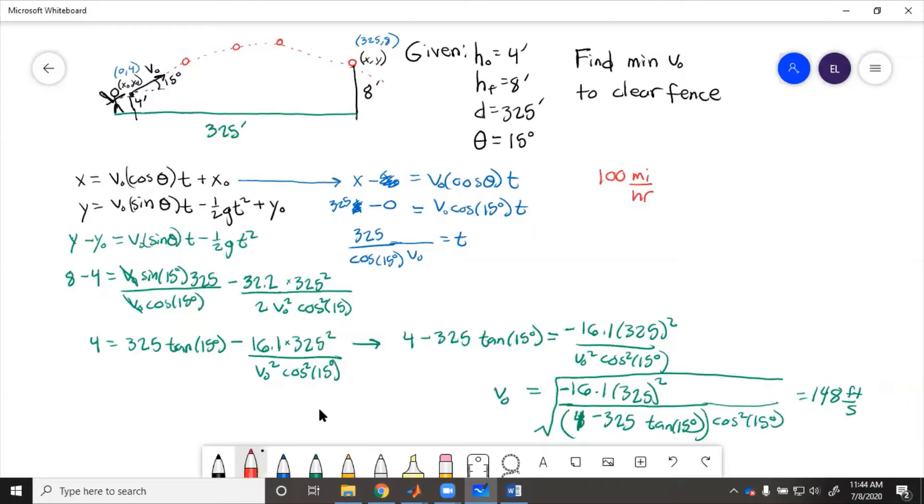So we convert that to feet per second, then we have 100 miles per hour times 5,280 feet per mile times one hour over 3,600 seconds, which equals 147 feet per second. So in order to hit a home run, the batter has to actually hit the ball faster than it got thrown at him.